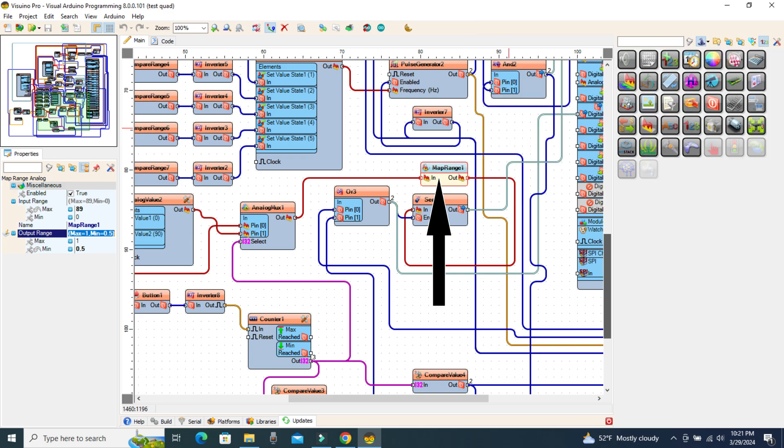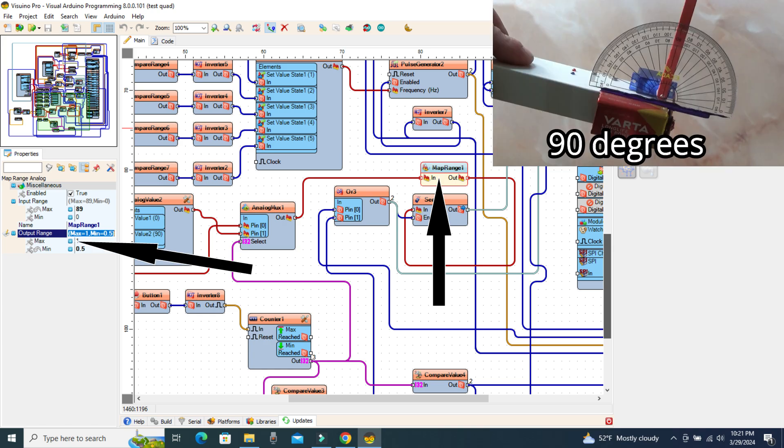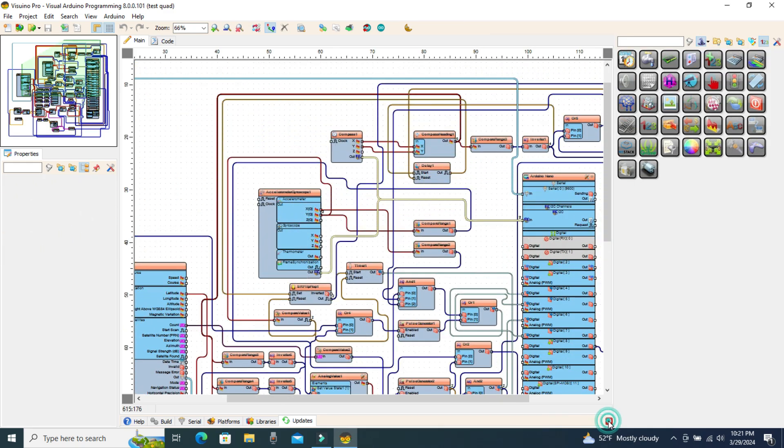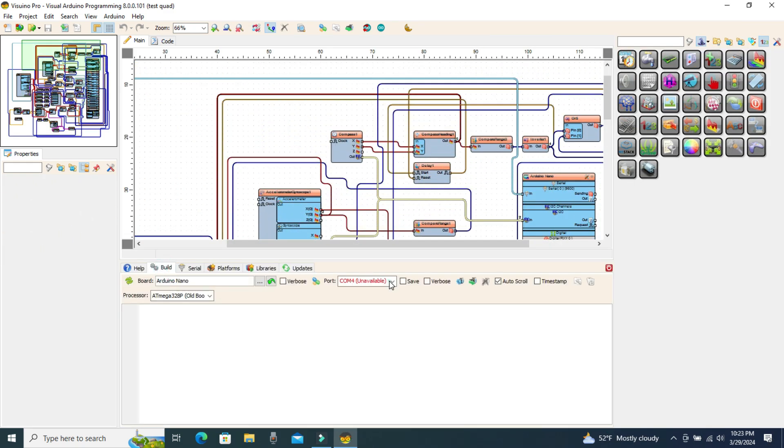The Analog Map component sets the stroke of the servo motor. You can adjust the minimum output value in certain cases if the indicator's stroke goes out of the 0 to 90 degree limits. Choose the correct port and upload the code to the Arduino.